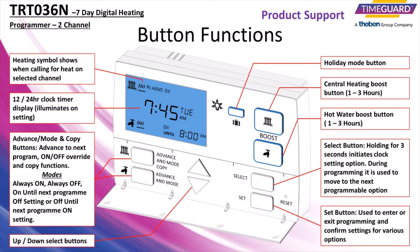The TRT-036N is a two-channel heating and hot water programmer. It can program independent times for each of its respective channels. Its features include a copy mode to transfer programs from one day to the next, holiday mode, and program overriding abilities. Please take a moment to study the control functions.